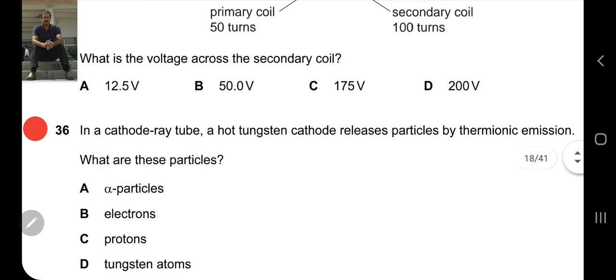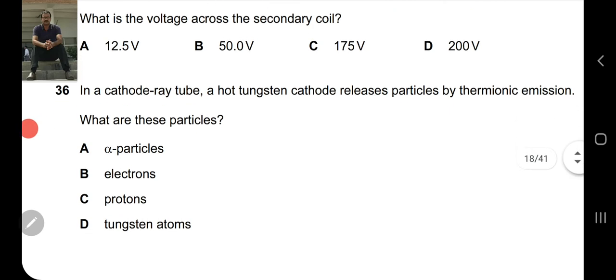Number 36. In a cathode ray tube, a hot tungsten cathode releases particles by thermionic emission. What are these particles? These particles are electrons which are negatively charged. So option B is the correct option. Thank you guys.